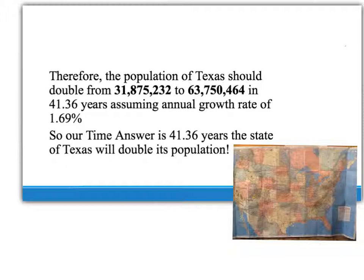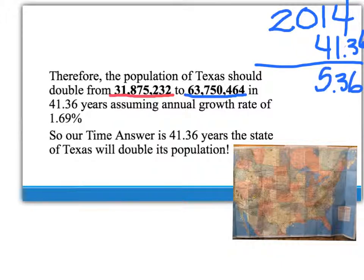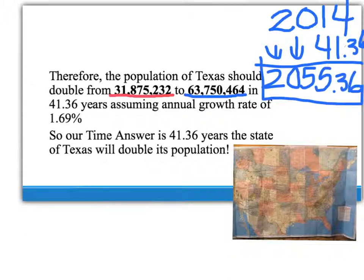The population of Texas right now is 31,875,232. If we double that population, it'll be 63,750,464. That will happen in 41.36 years at a growth rate of 1.69%. The estimate we have is from the year 2014. Adding 41.36 years — 2014 plus 41 is 2055 — means in the year 2055, about three months into that year, the state of Texas should double its population from 2014.